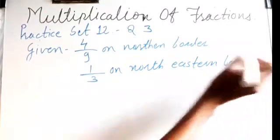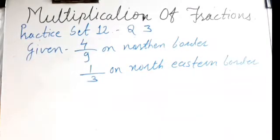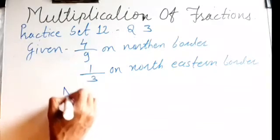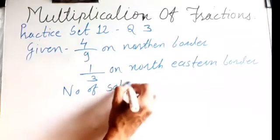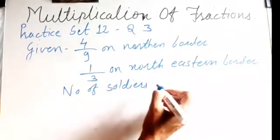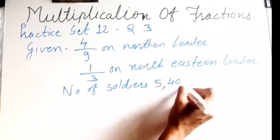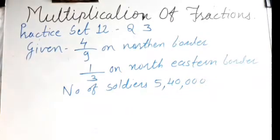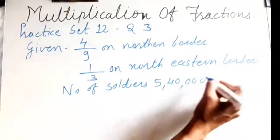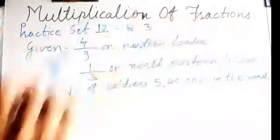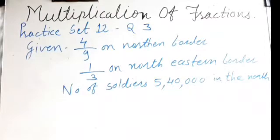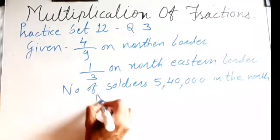The total number of soldiers in the north is given as five lakh forty thousand. Read the number properly: five lakh forty thousand soldiers are on the northern border. The question asks: how many are posted in the northeast?